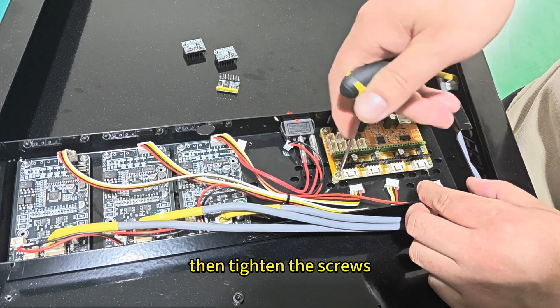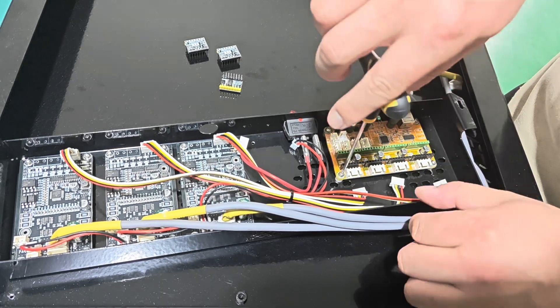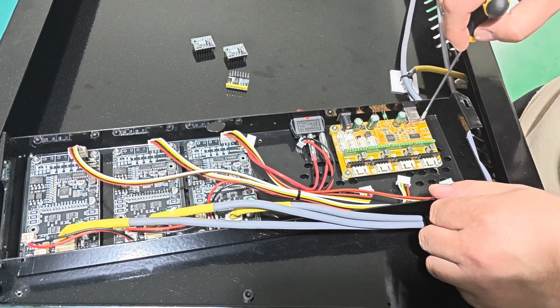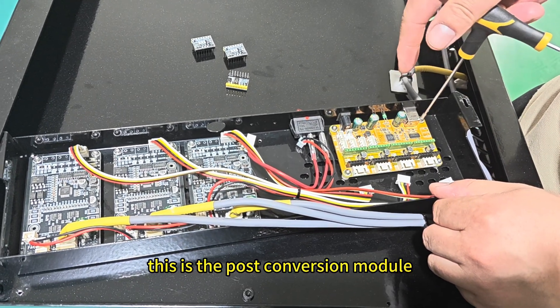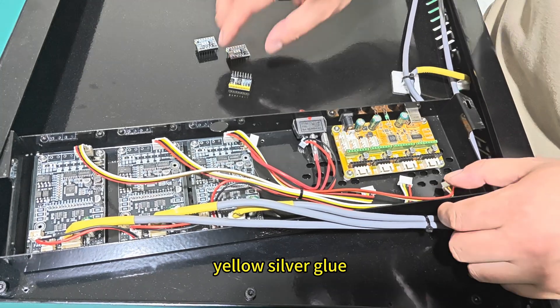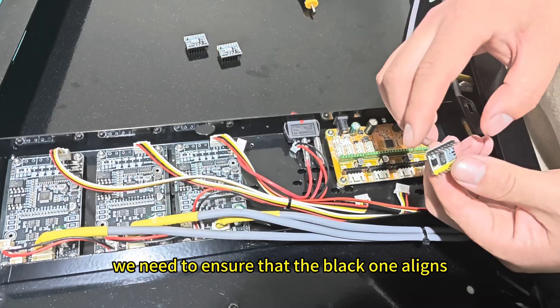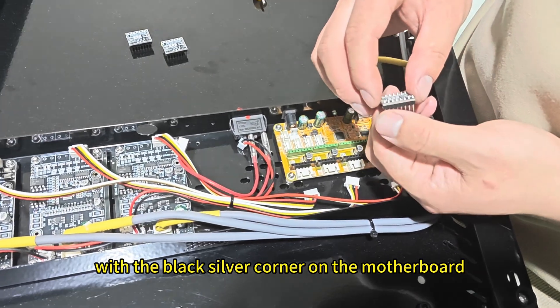Then tighten the screws. This is the pulse conversion module. Yellow silver glue and black silver glue. We need to ensure that the black one aligns with the black silver corner on the motherboard.